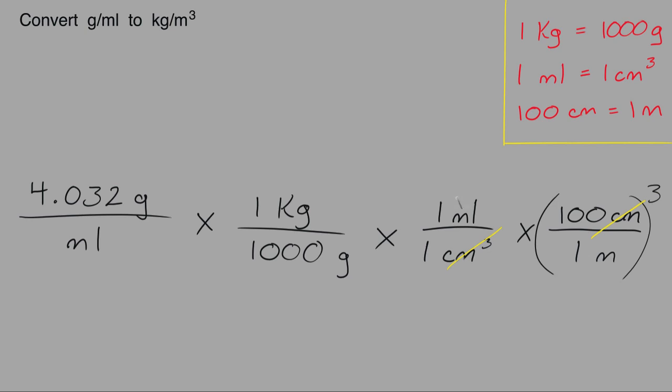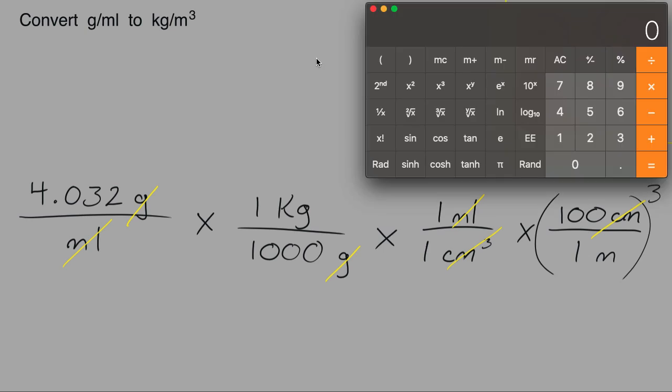We can cancel the milliliters here with these milliliters, and we can cancel the grams here with this unit of grams. Then we can calculate the numbers. When the numbers are on the bottom, we divide, and if the numbers are on the top, we multiply — just ignore the ones, since a number multiplied by 1 is the same number, and a number divided by 1 is the same number. So 4.032 divided by 1000, multiplied by 100 raised to the power of 3.